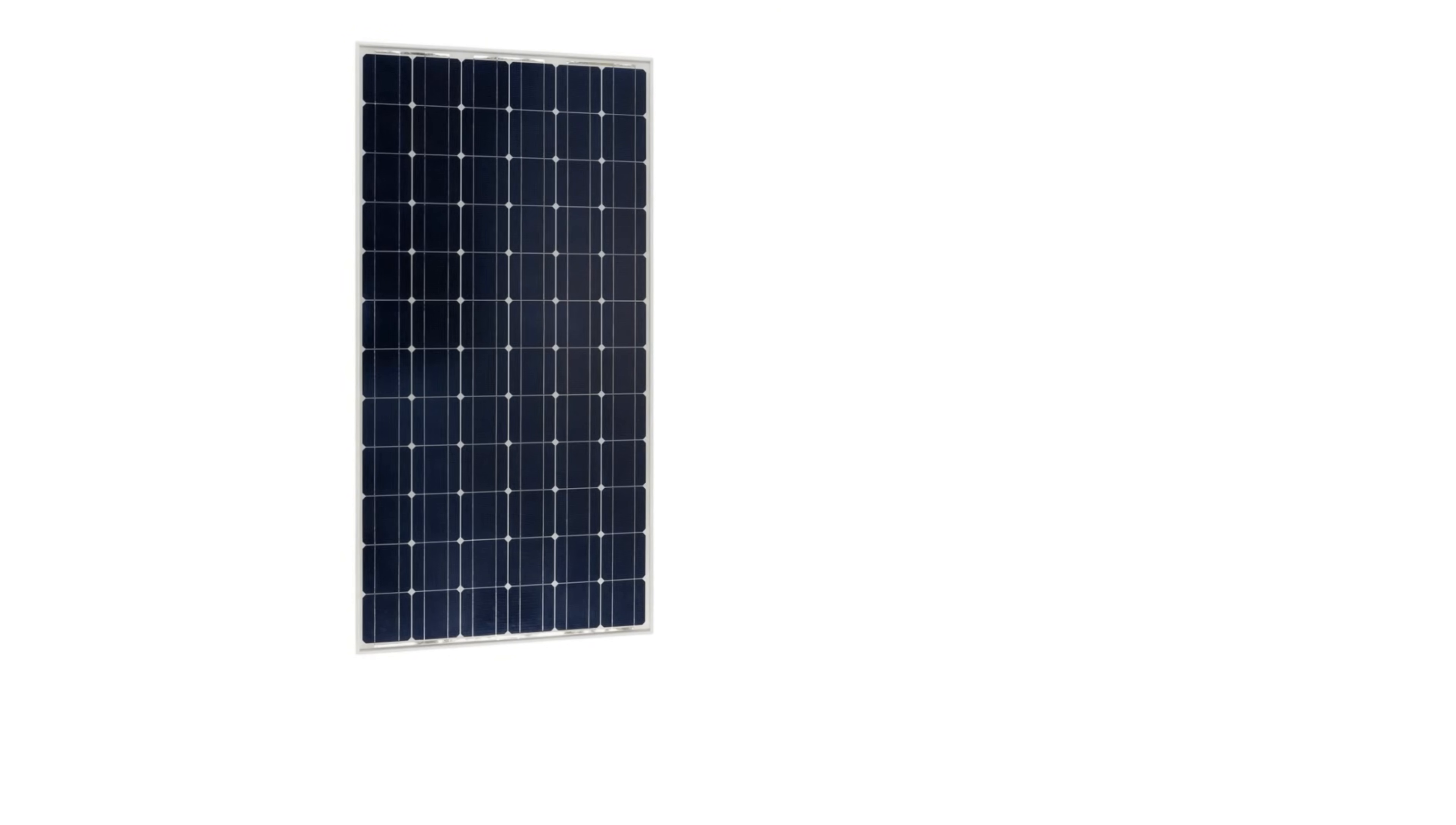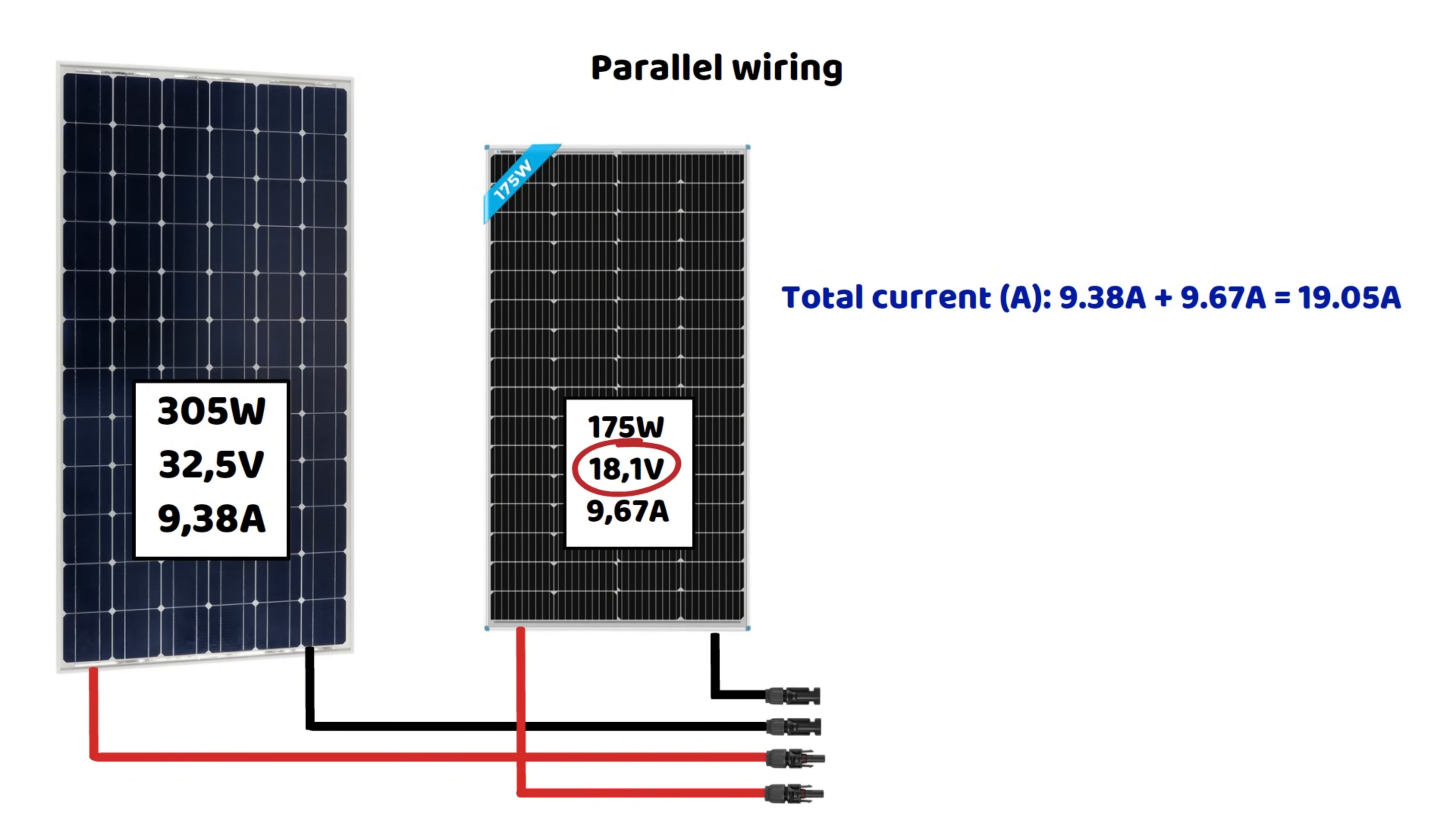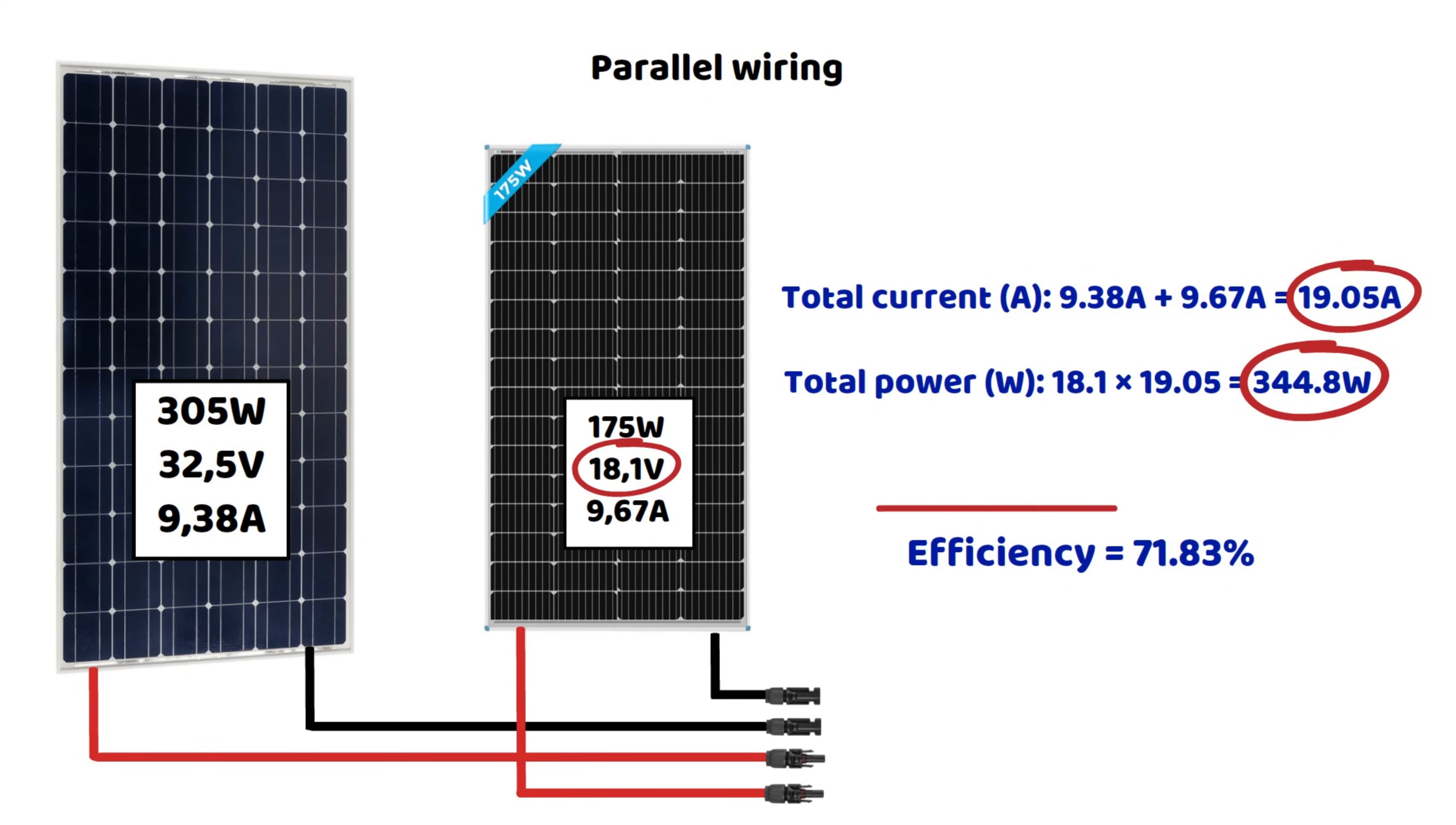Let's start our calculation with a parallel connection this time. In a parallel connection, the currents add up, and the voltage is limited to the lowest of the two. Here, this gives us a voltage of 18.1 volts. Since the currents add up, 9.67 amps plus 9.38 amps equals 19.05 amps. The total power is therefore calculated by multiplying 18.1 by 19.05, which gives us 344.8 watts. The efficiency compared to the theoretical total power will therefore be only 71.83%. That's quite a significant loss, so let's see how it looks with the series configuration.